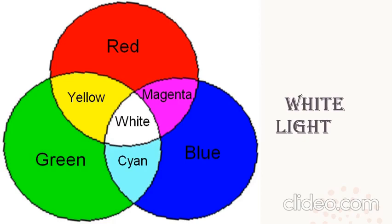White light is nothing but the combination of all colors. What are the colors which exist in a rainbow? Your rainbow has seven colors. When you add all these seven colors, you will get white light. In the same manner, when you add all your primary and secondary colors, you will get your white light.